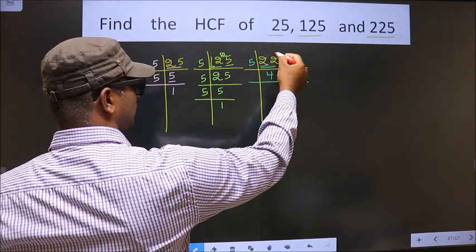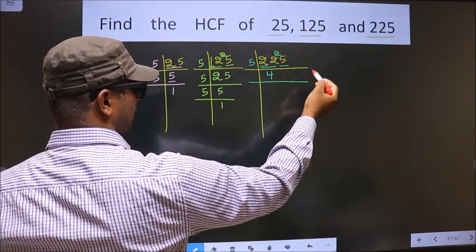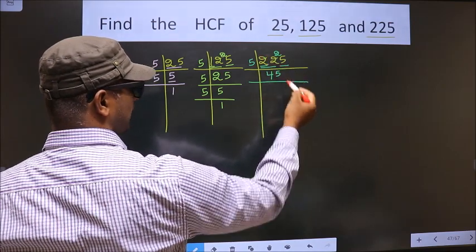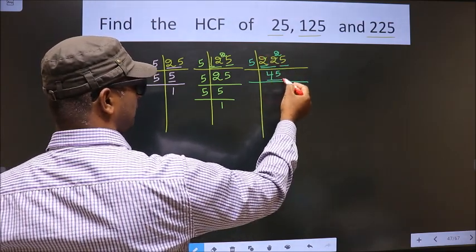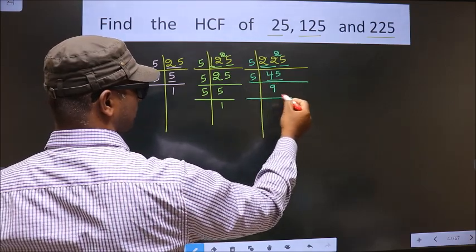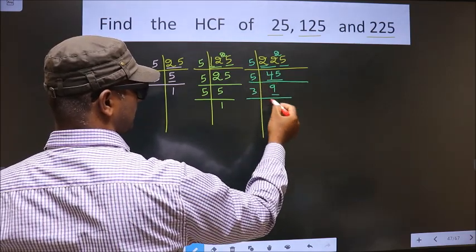22 minus 20 is 2, 2 carried forward making it 25. When do we get 25 in 5 table? 5 times 5 is 25. Now here we have 45 that is 5 times 9 is 45. Now 9 is 3 times 3.